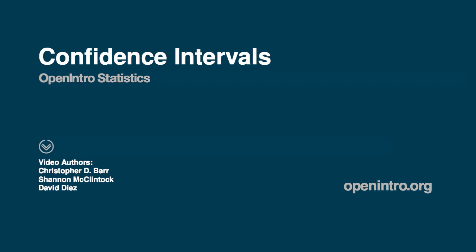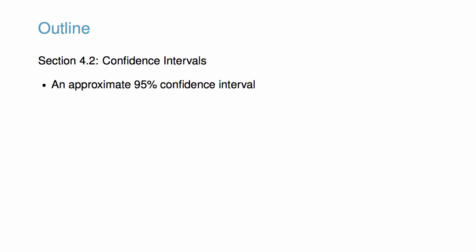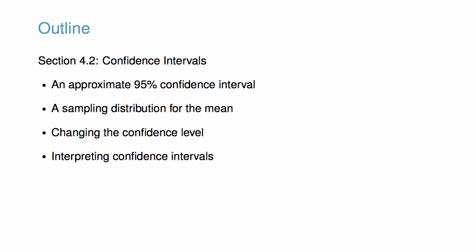This video accompanies the discussion of confidence intervals in OpenIntro Statistics. We will introduce an approximate 95% confidence interval and consider a sampling distribution for the mean. Then we will learn about changing the confidence level and make sure we are interpreting confidence intervals exactly as we should be.